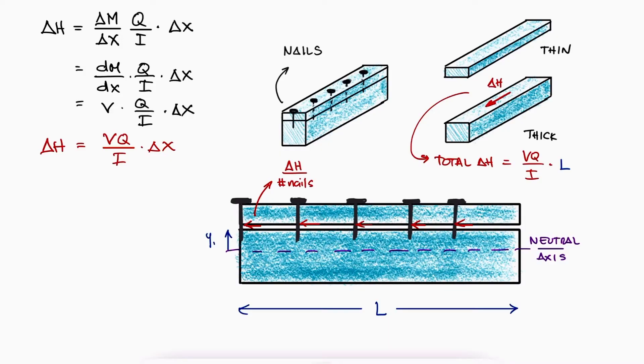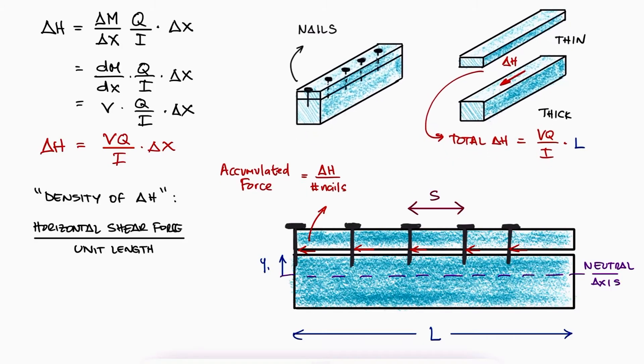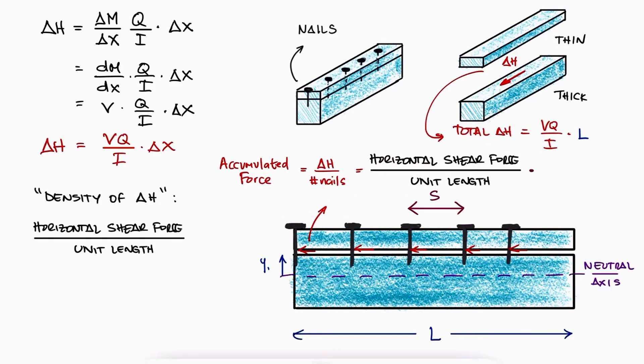If instead we define the magnitude of delta H as somewhat of a density, meaning the horizontal shear force you would get per unit length along the x-axis, we could more easily just measure the distance between nails and see that the sort of accumulated force between one nail and the next is equal to that shearing force density, times the length between nails, which is much more efficient.